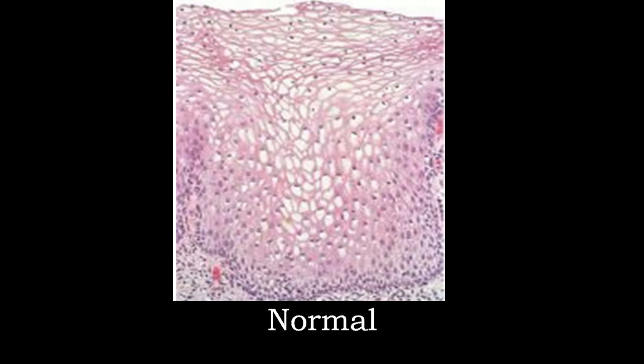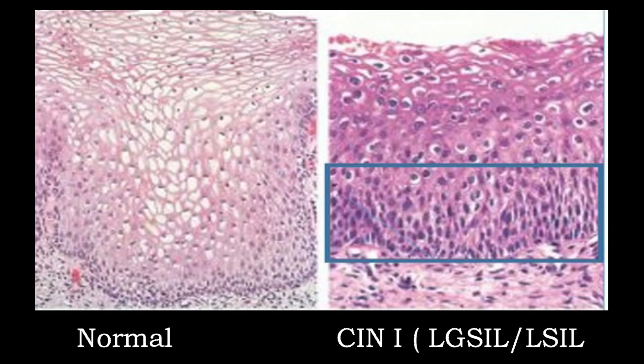This photograph shows the microscopic features with normal distribution of the epithelium for comparison. The next photograph shows normal appearance of the epithelium alongside CIN1 — that is LSIL or low-grade squamous intraepithelial lesion — in which the lower one-third of the epithelium shows dysplastic changes and loss of normal pattern, marked with a blue rectangle.